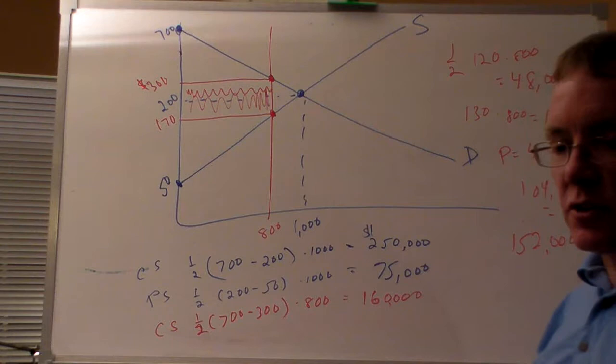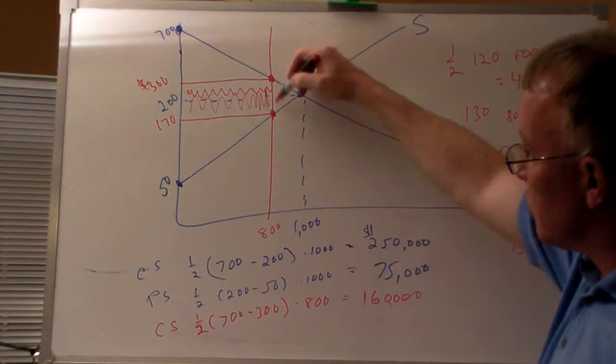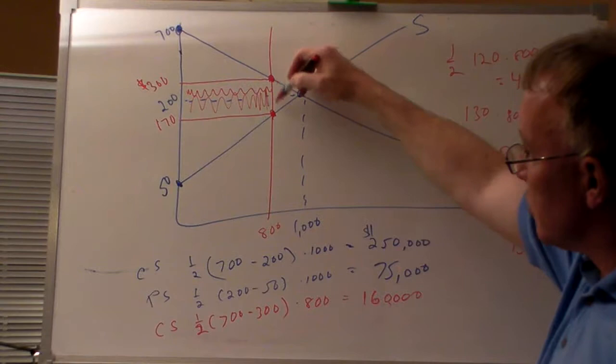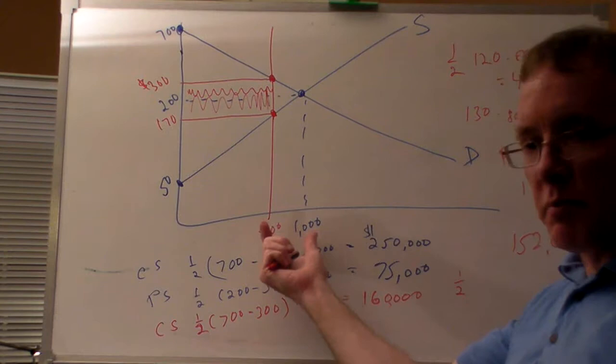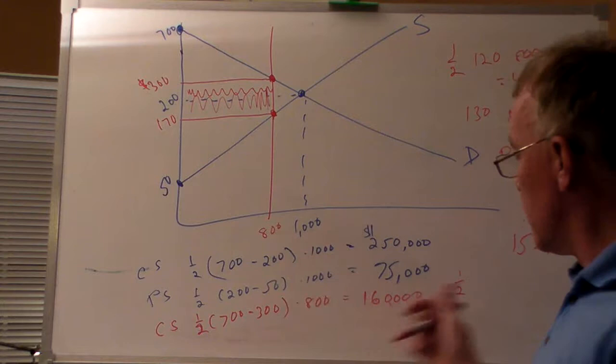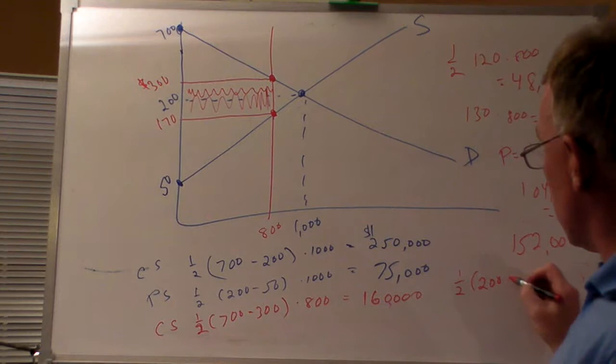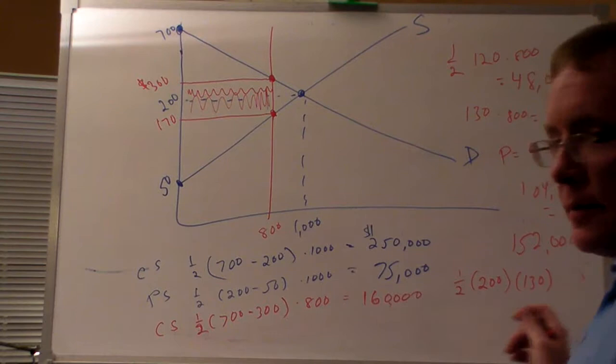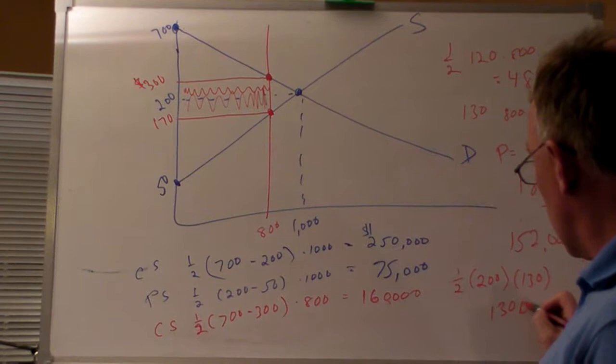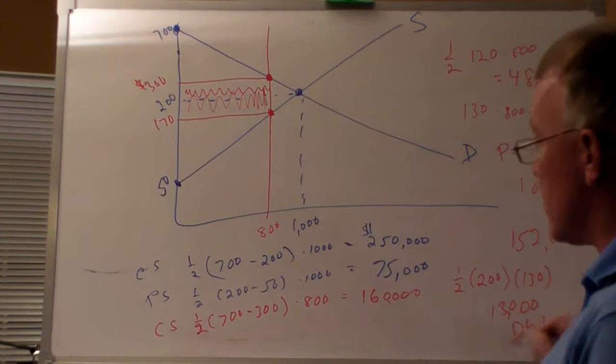Of course, there is a loss to overall society — what we call the deadweight loss — which is the area of this triangle. It's based on the fact that we have fewer parking spaces than we'd want in an efficient equilibrium. It's half of 200 (which is 1,000 minus 800) times 130 (which is 300 minus 170). So half of 200 times 130 gives a deadweight loss of 13,000 — a function of having 200 fewer spaces than we'd have at equilibrium.